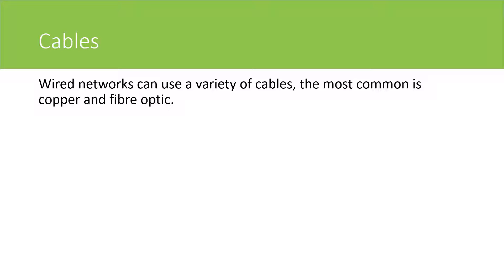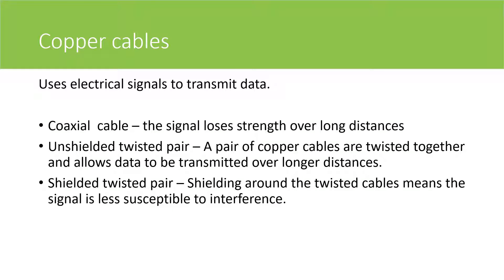Wired networks can use a variety of different cables, the most common being copper and fibre optic. Copper cables use electrical signals to transmit data. There are three types of copper cables that are used.